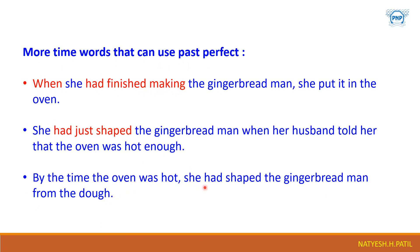You can see 'had shaped' has been used there. So mostly when there is a sequence with past tenses to be followed, you will get some time words like 'when', 'just', 'by the time', and words like 'after'. Understood this much?